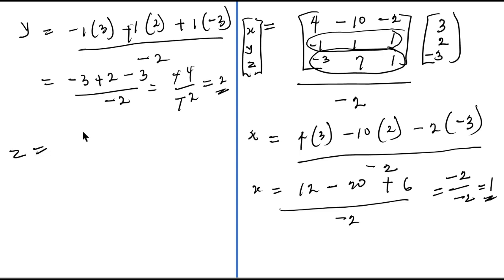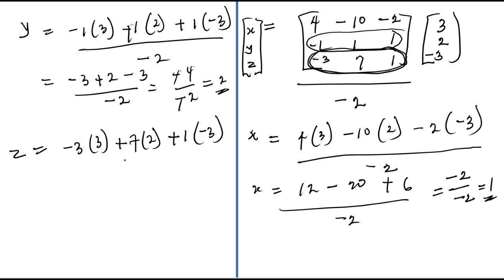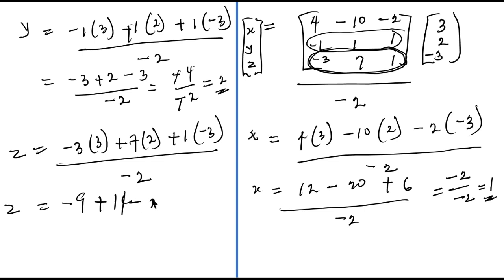To solve for z, I pick the last row of the adjoint and multiply by vector B: minus three times three is minus nine, plus seven times two is plus fourteen, and plus one times minus three is minus three, all over minus two. That gives minus nine plus fourteen minus three equals two, over minus two, so z equals minus one.